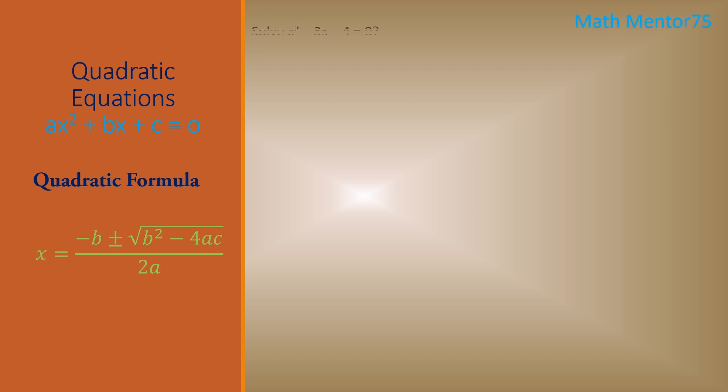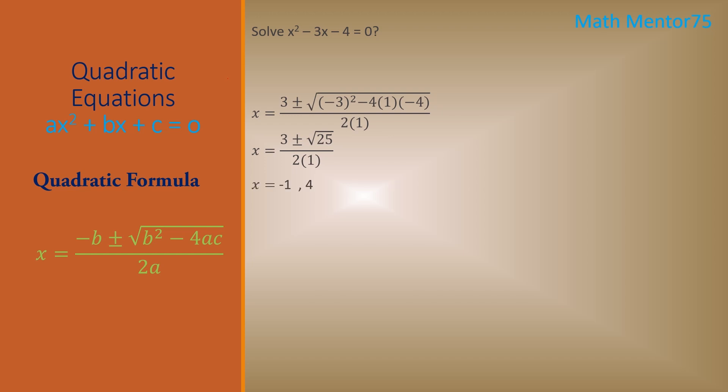Let's do an example: x squared minus 3x minus 4. Just plug in the values into the quadratic formula. After solving it we have two roots: minus 1 and 4. If you focus on the value inside the square root, which is 25, this is the answer for b squared minus 4ac, and this answer is positive — 25.